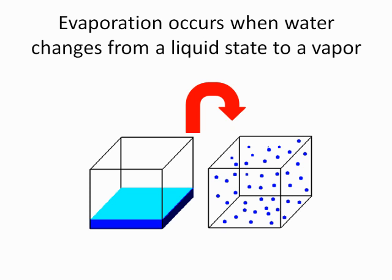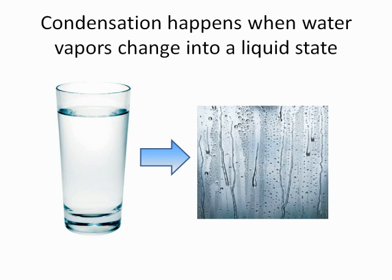Evaporation is important because it completes the water cycle. If water did not evaporate, the earth would not receive rainfall because clouds would not be able to condense in the air.